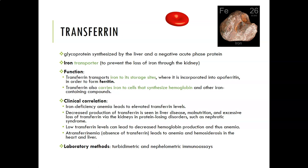In iron deficiency anemia you will see elevated levels of transferrin, because the body is trying to get as much iron as possible to where blood building is happening. Decreased production of transferrin is seen in liver disease, malnutrition, and excessive loss of transferrin through the kidneys in protein-losing disorders like nephrotic syndrome. Low transferrin levels lead to decreased hemoglobin production and thus anemia, because without transferrin you cannot get iron to the site of red cell production.